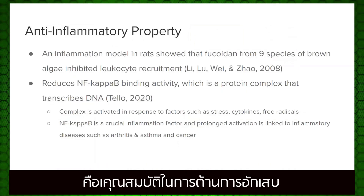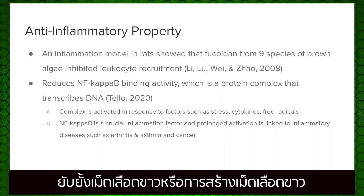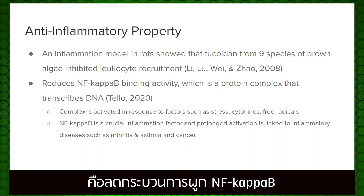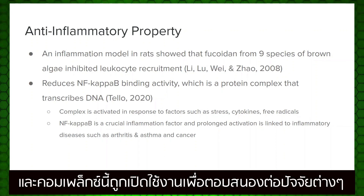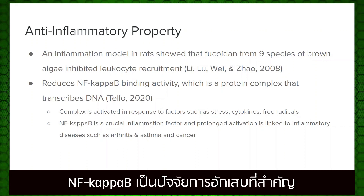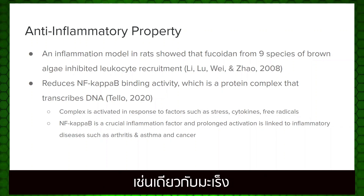One property Fucoidan exhibits is an anti-inflammatory property. An inflammation model in rats showed that Fucoidan from 9 species of brown algae inhibited leukocyte, or white blood cell, recruitment. The mechanism behind this is that it reduces NF-kappa-B binding activity, a protein complex that transcribes DNA, activated in response to stress, cytokines, and free radicals. NF-kappa-B is a crucial inflammation factor, and prolonged activation is linked to inflammatory diseases such as arthritis, asthma, and cancer.